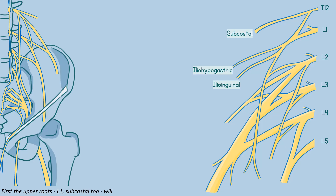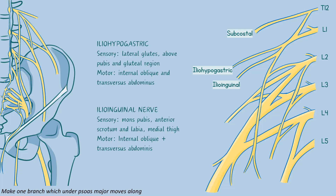First, the upper root cell L1, subcostal L2 will make one branch which runs alongside psoas major as it moves along. First to leave this branch is iliohypogastric, next is ilioinguinal — all down the abdomen they go.